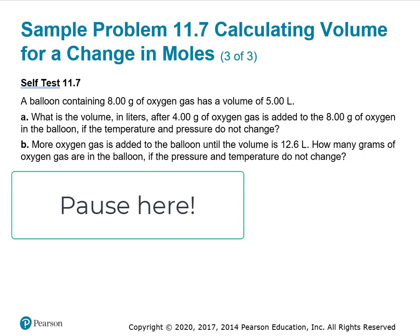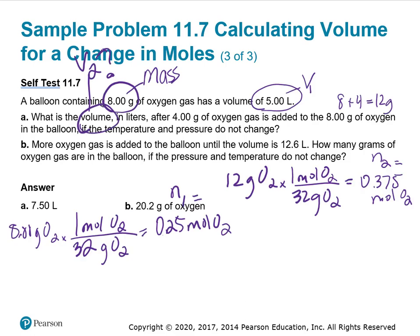Pause the video here to do this practice problem. We're given a balloon containing 8 grams of oxygen gas. That's a mass. We always go from grams to moles, so let's do that right off the bat. 8 grams of oxygen, going grams to moles. We know oxygen gas is always diatomic, so it's O2. There's 32 grams of oxygen gas in 1 mole. So my initial moles is 0.25 moles of O2.